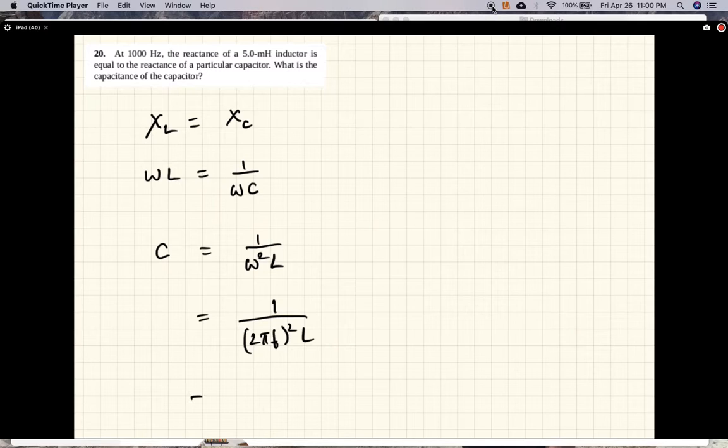Let's put in these values: 1 over 4 pi squared F squared, 10 to the power of 3 Hz squared, L is 5 mH.